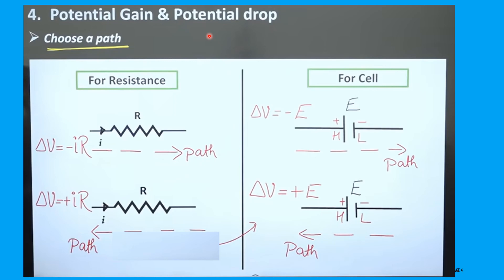Let us learn how to choose a path for a resistance and a cell. For a resistance, delta V equals IR. If the direction of current and direction of path are the same, delta V is negative. If the direction of current is opposite to the direction of the path, delta V is positive IR.